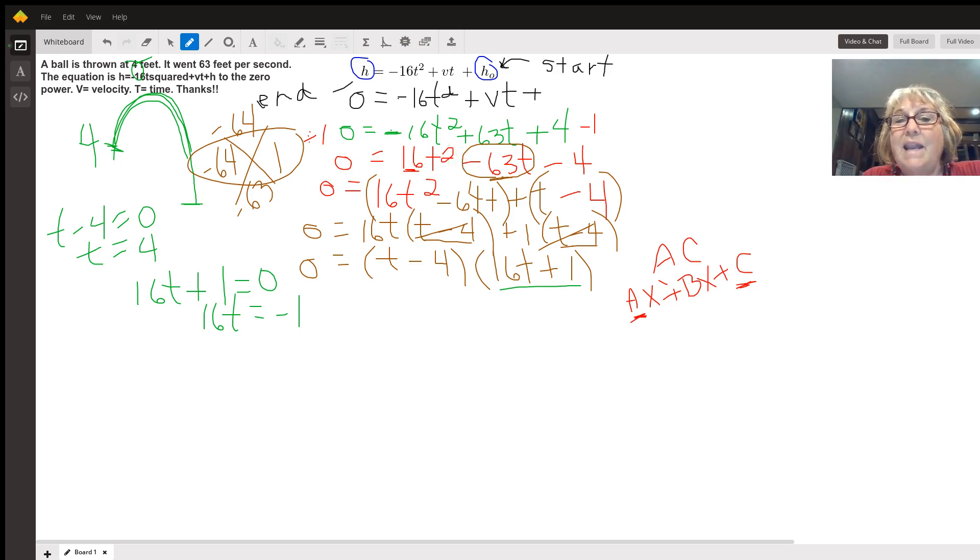Time can't be negative. You can't have negative time. You can only have positive time. So therefore this answer is not even an option, even though mathematically negative one sixteenth would make it work. But in a real life situation, time cannot be negative. Therefore, the only answer I can use is the four.